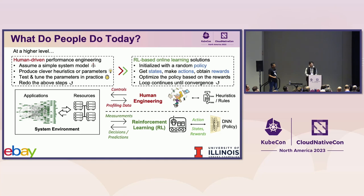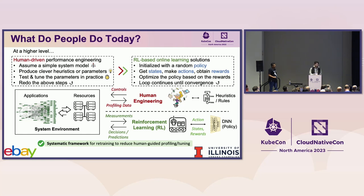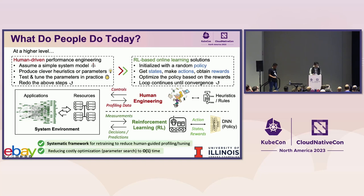There are two main reasons why learning-based approaches like RL are suitable for cloud system management. First, it provides a systematic framework for automatic retraining to reduce repeated human-driven profiling and tuning. Second, it reduces costly optimization or search to constant time, making it scalable to the large state-action space in dynamic cloud environments for heterogeneous applications.